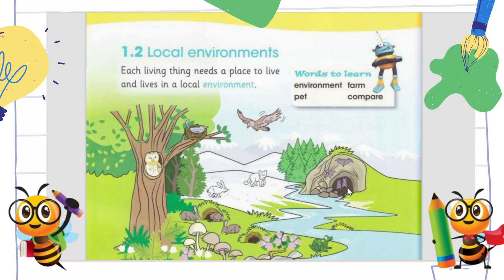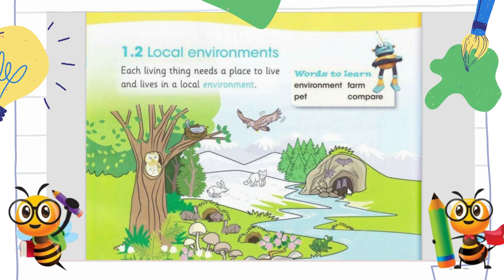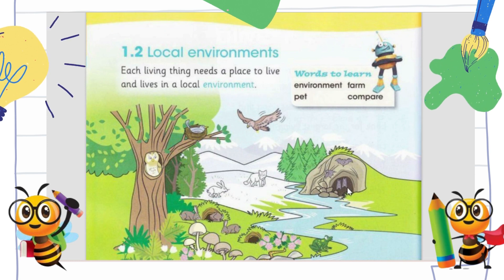Our new topic is local environment. What is local environment? Local means the place where we are living continuously. As human beings, our local is like we are living on the earth, so this is our local environment. We live on the earth, we can see the sun, at night we can see the black sky, when the rain comes we can see the clouds, we can see the trees.